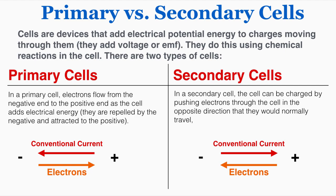This happens too in secondary cells, but the difference is that when secondary cells are being recharged, they're recharged by pushing electrons through the cell in the opposite direction that they would normally travel, adding more chemical energy into the cell. So when a secondary cell is being recharged, the electrons are actually pushed from positive to negative — not because they're attracted to the negative, but only because they're being pushed by some outside voltage. Because of this, the conventional current flows in the other direction.